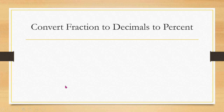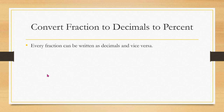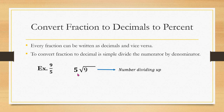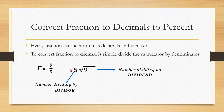Now let's convert fractions to decimals and also to percent. Every fraction can be written as a decimal and vice versa. To convert a fraction, simply divide the numerator by the denominator. The number being divided is called the dividend, the number dividing by is called the divisor, and the result is called the quotient.